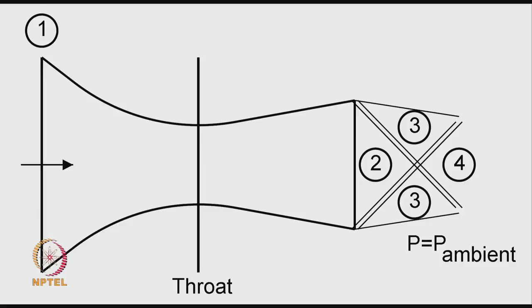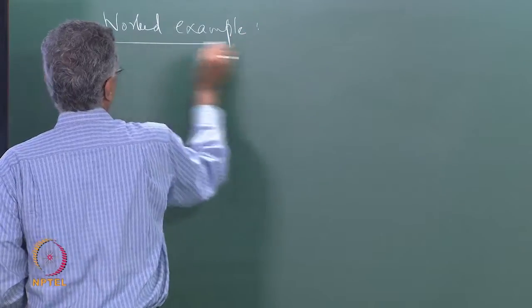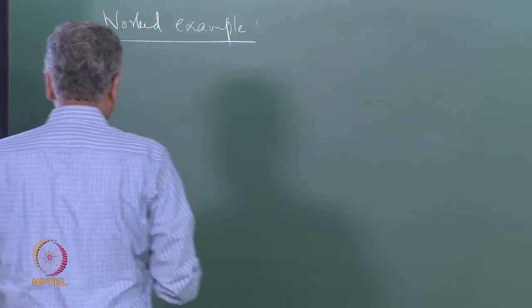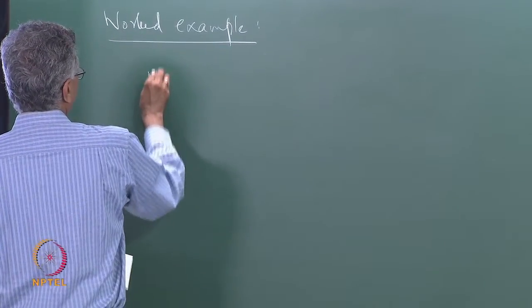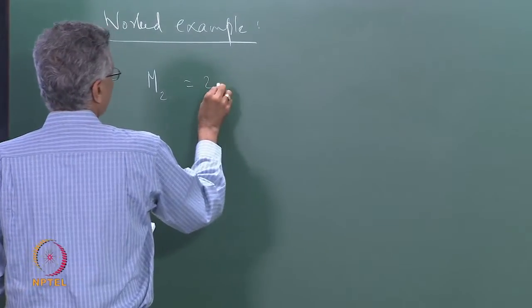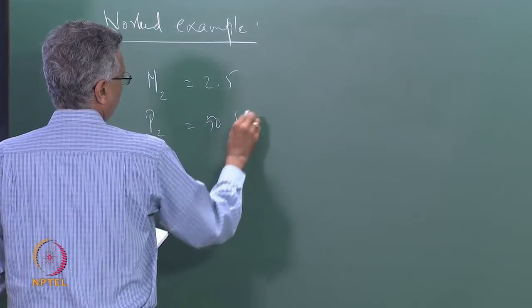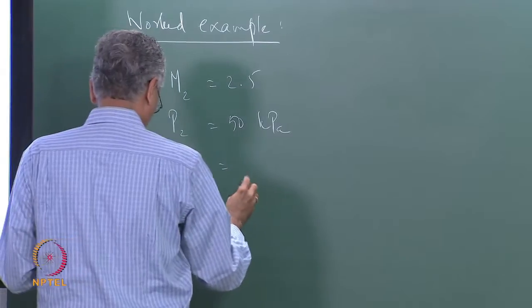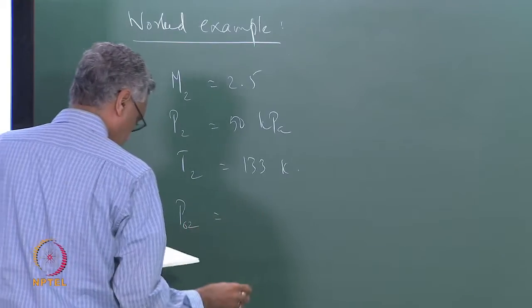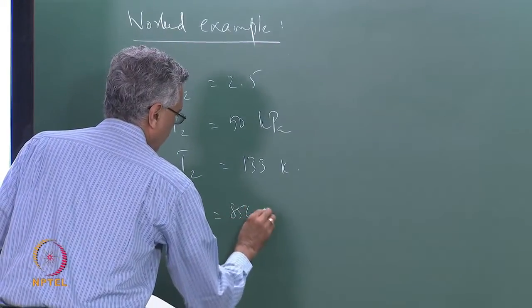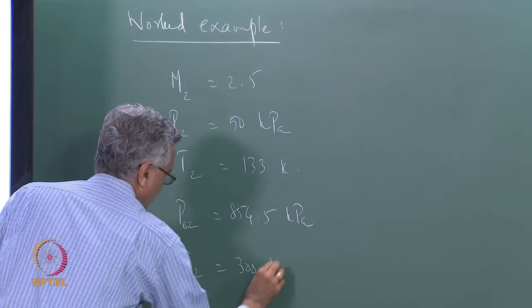Continuing the previous worked example, from our last lecture we evaluated: M2 = 2.5, static pressure P2 = 50 kPa, static temperature T2 = 133 K, stagnation pressure P02 = 854.5 kPa, and stagnation temperature T02 = 300 K.